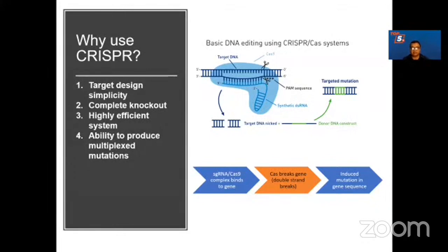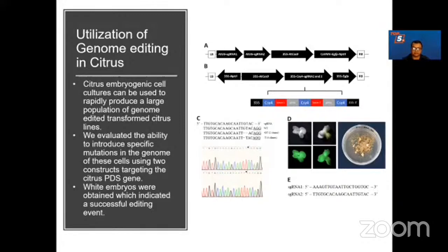We like CRISPR-Cas9; we have used other genome editing technologies in the past, but we like CRISPR-Cas9 because the target design is very simple, it results in a complete knockout of your target gene, and it is a highly efficient system. We are also able to produce multiplex mutations in several genes simultaneously. The sgRNA-Cas9 complex binds to the gene, the Cas protein breaks the gene, inducing mutation and either a frameshift that allows the gene to be silenced. We published on genome editing in citrus in BMC Biotechnology, developing a technique for genome editing of citrus embryogenic cell cultures, which can be rapidly used to produce a large population of genome-edited transformed citrus plants.